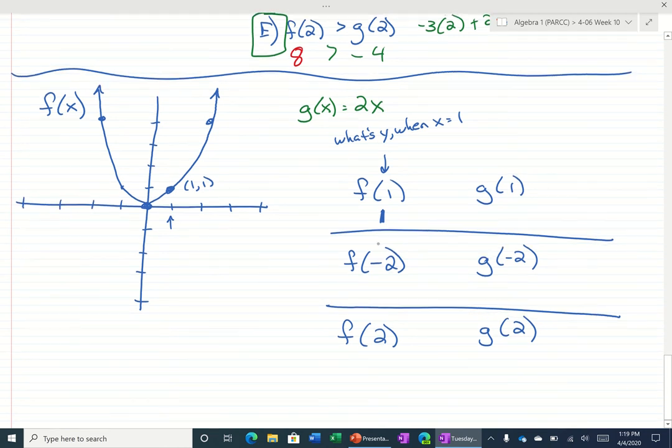So what is y when x is negative 2? Well, that would be this point right here. We have the point negative 2, 4.